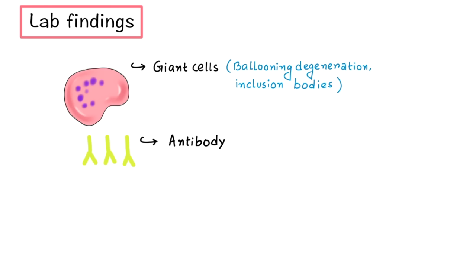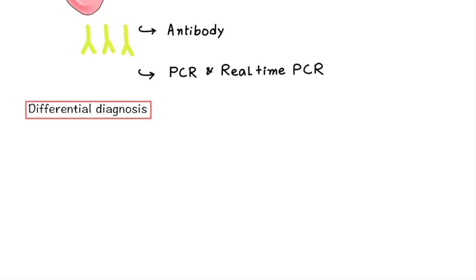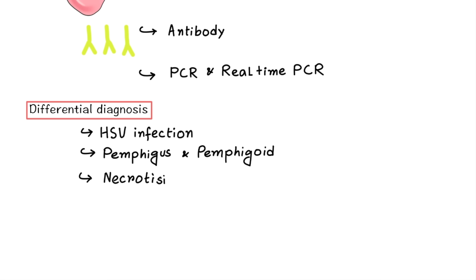Now some differential diagnosis. Differential diagnosis can be Herpes simplex virus infection, Pemphigus and Pemphigoid, necrotizing ulcerative periodontitis and pulpitis.